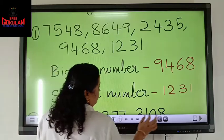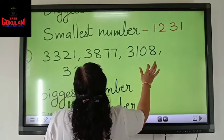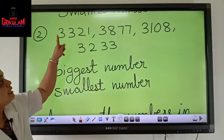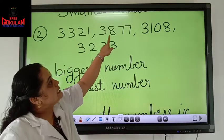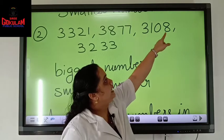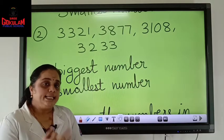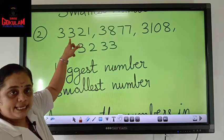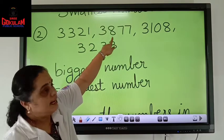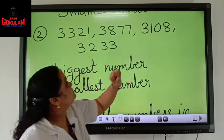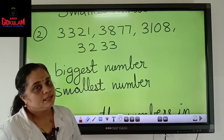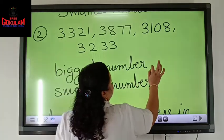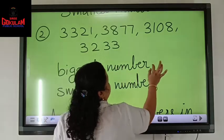Let's do one more example. Let's look at these numbers: 3321, 3877, 3108, and 3233. In the thousands place, the digit 3 is common to all. So what will we do? We will go for the next position. Here 3 is in the hundreds place, here 3 is in the hundreds place, here 1 is in the hundreds place, and here 2 is in the hundreds place. Now it is easy for us.